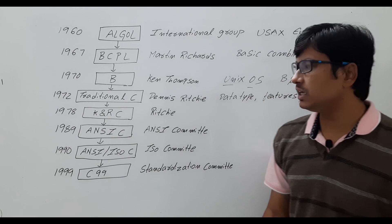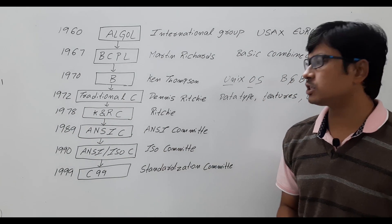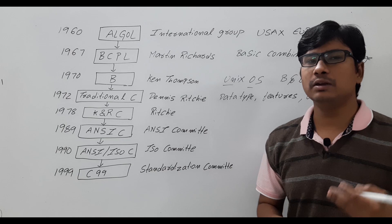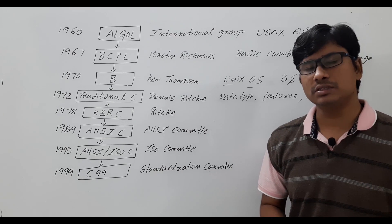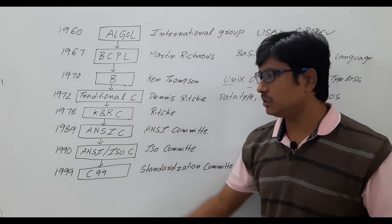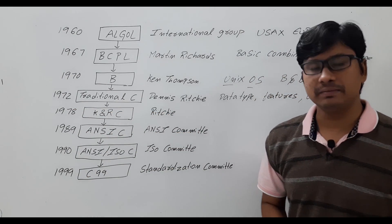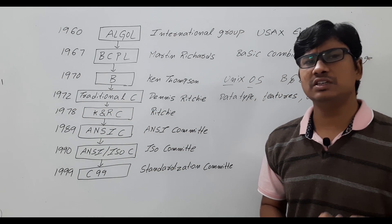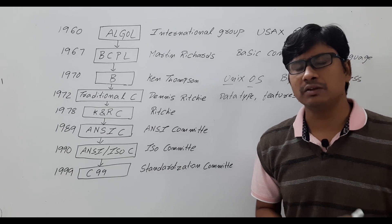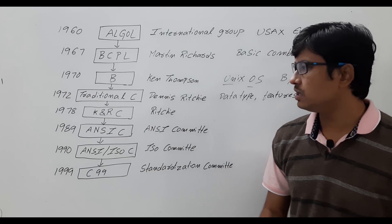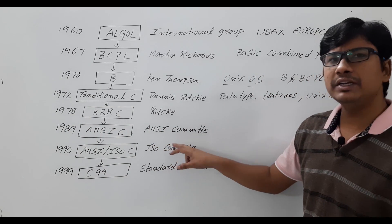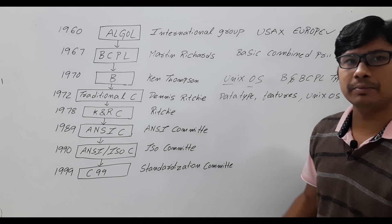The C programming language became very famous. In 1978, Ritchie wrote a textbook called K&R C so that other people could read about the C programming language. Then between 1978 and 1989, so many versions of the C language came into the picture, and people got confused about which version was better. Then in 1989, a committee called the ANSI committee was formed — ANSI means American National Standard Institute Committee.